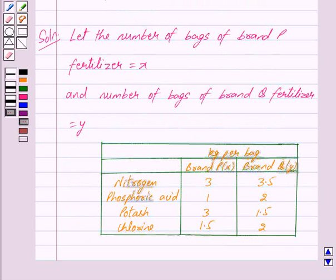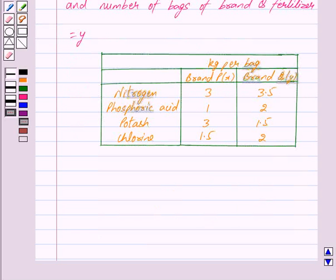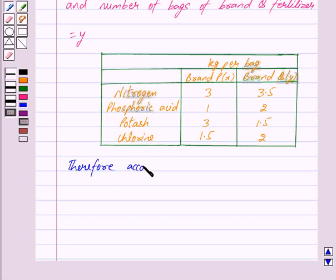We are given the following table showing the amount of nitrogen, phosphoric acid, potash and chlorine in a bag of each brand. We are also given that the garden needs at least 240 kilograms of phosphoric acid, at least 270 kilograms of potash and at most 310 kilograms of chlorine.